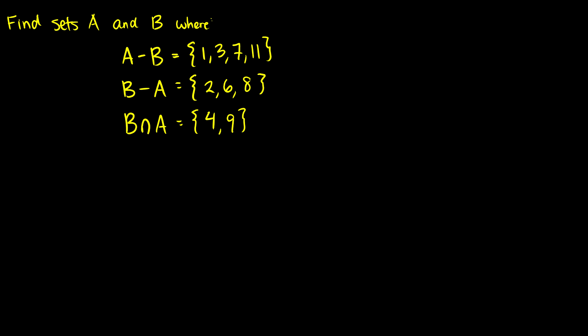So in this question, we have to find set A and B, but we know that A minus B is 1, 3, 7, 11, B minus A is 2, 6, and 8, and the intersection is 4 and 9. So what I suggest doing is actually making a Venn diagram for these things, especially if the amount of items we're counting are very small. So A is going to be a little bit bigger than B.